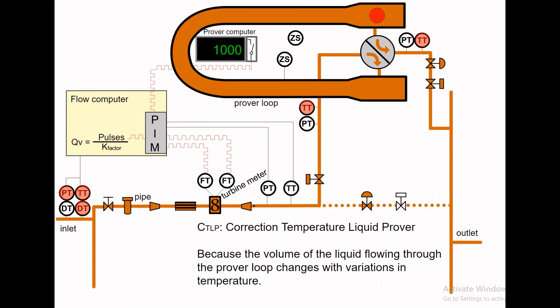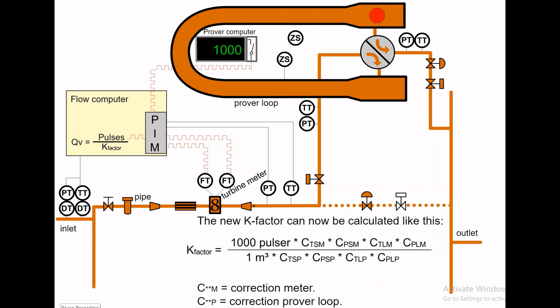CTLP, Correction Temperature Liquid Prover, makes the correction required because the volume of the liquid flowing through the prover loop changes with variations in temperature. CPLP, Correction Pressure Liquid Prover, makes the correction required because the volume of the liquid flowing through the prover loop changes with variations in pressure. This is the formula to calculate the new k-factor.